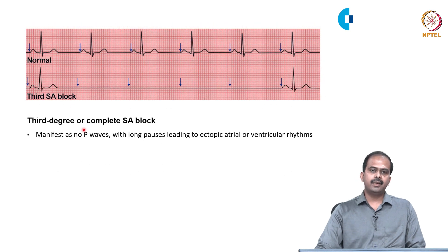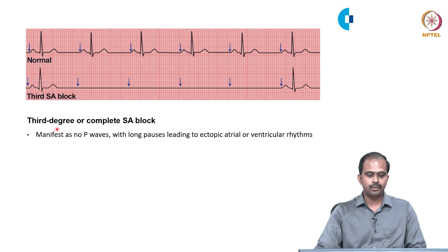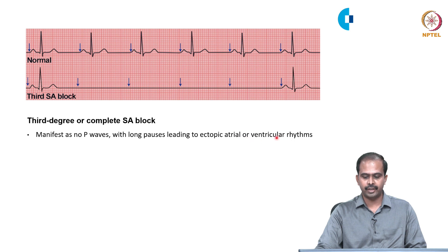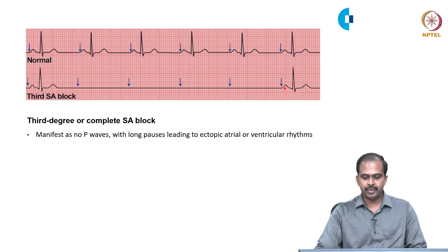Third degree or complete SA block manifests as no P waves with long pauses leading to ectopic atrial or ventricular rhythms. In this ECG, there is a P wave followed by a long pause before the next P wave appears, confirming third degree or complete SA block.